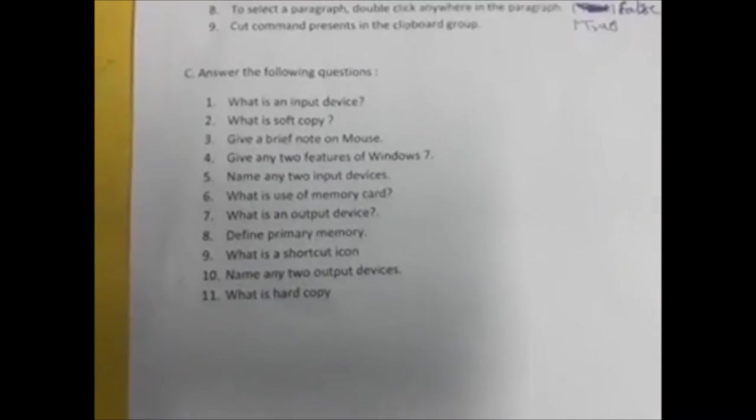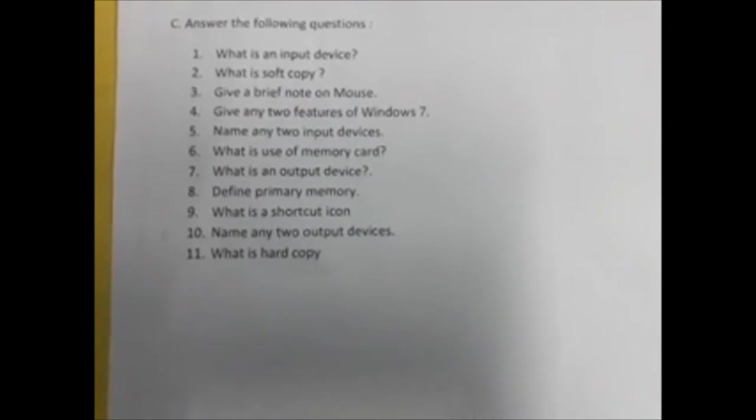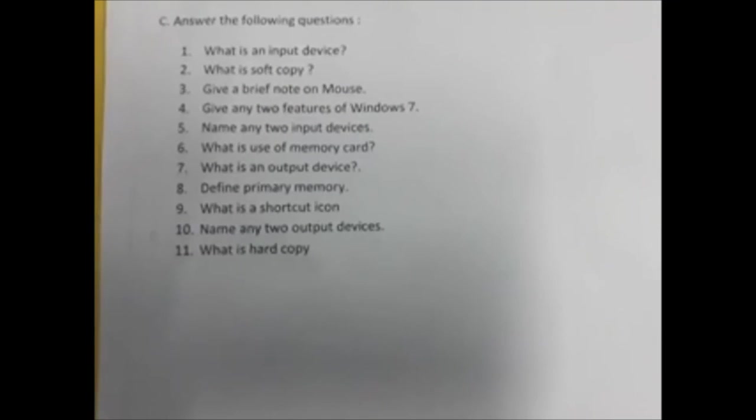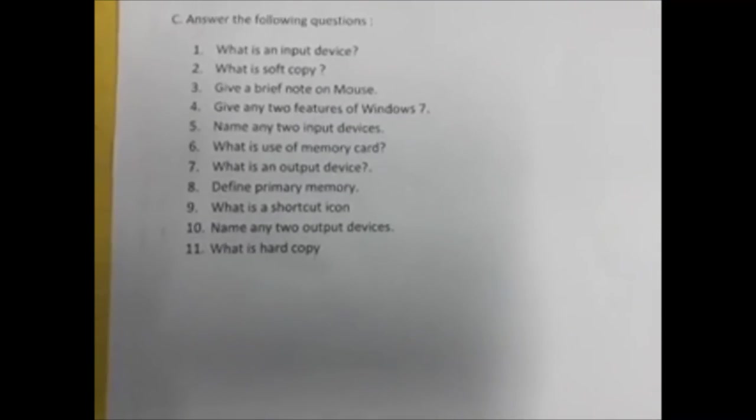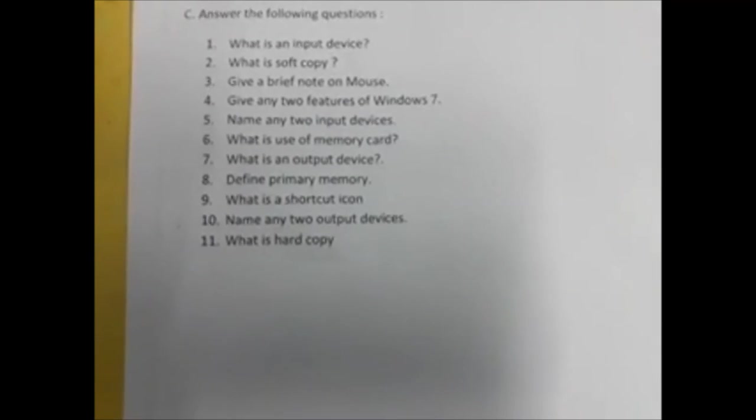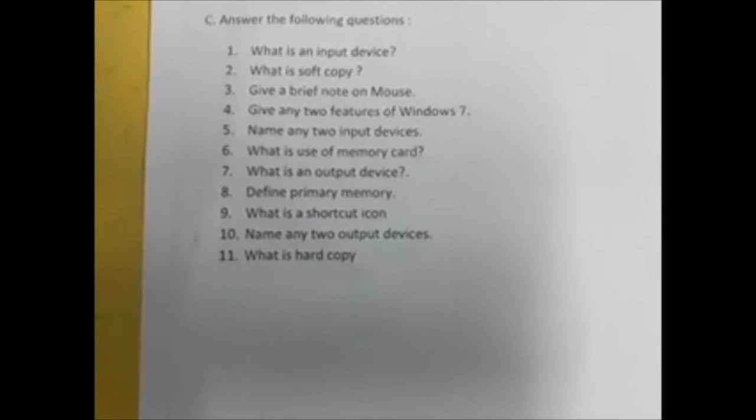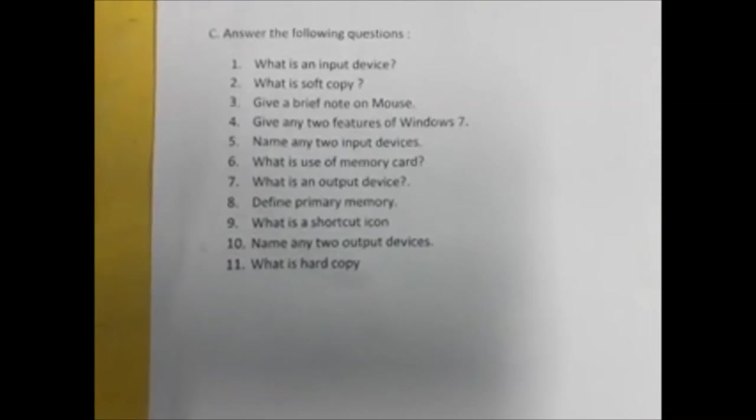Name any two output devices. Printer is output device, speaker is output device, monitor is output device. Next is what is hard copy? The printed copy is called hard copy that we get from the printers.